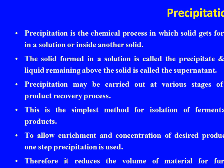Precipitation is the chemical process in which a solid gets formed in a solution or inside another solid. The solid formed in a solution is called the precipitate and the liquid remaining above the solid is called the supernatant. Precipitation may be carried out at various stages of the product recovery process. This is the simplest method for isolation of fermentation products. To allow enrichment and concentration of the desired product in one step, precipitation is used, therefore reducing the volume of material for further processing.